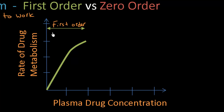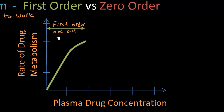As I increase the amount of drug getting to the liver — increasing the plasma drug concentration — I'm recruiting more enzymes, and as a result the rate of drug metabolism is going up as well. What I'm noting here is that the in is proportional to the out: the in being the drug getting to the liver, the out being the metabolized product.